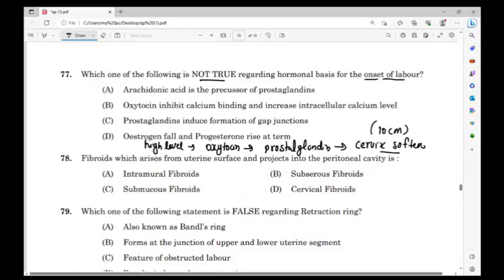Progesterone also, full term 32 weeks model progesterone also will be high. 32 to 37 weeks, progesterone also will be high. Progesterone also prevents premature labor. Progesterone also prevents premature labor.